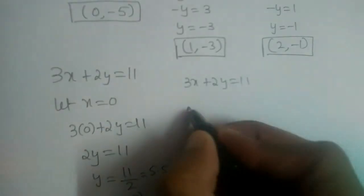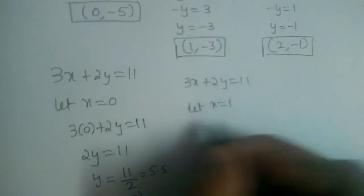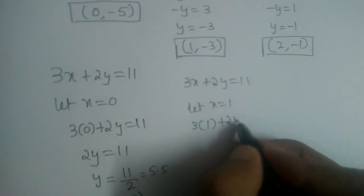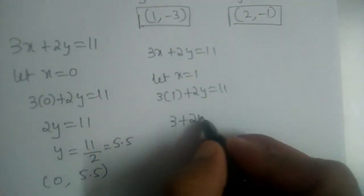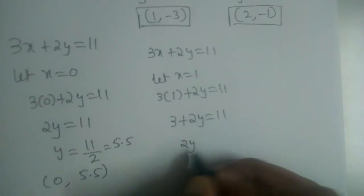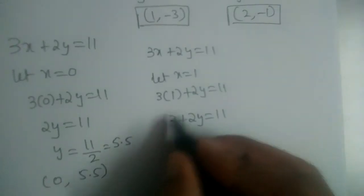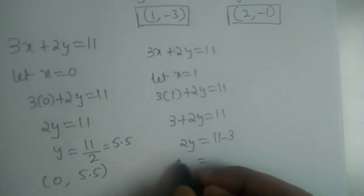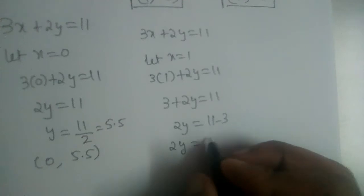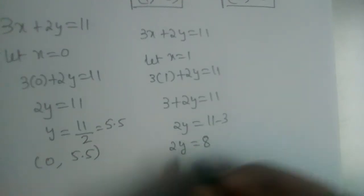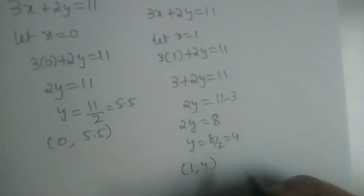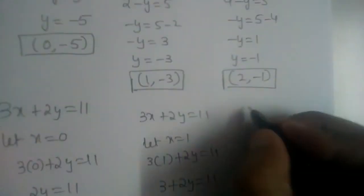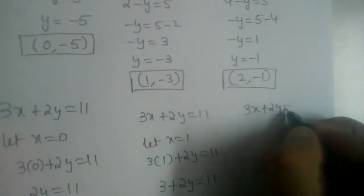Now let us substitute x is equal to 1. So 3 into 1 plus 2y is equal to 11, giving 3 plus 2y is equal to 11. Therefore 2y is equal to 8 and y is equal to 4. The second point is 1 comma 4.